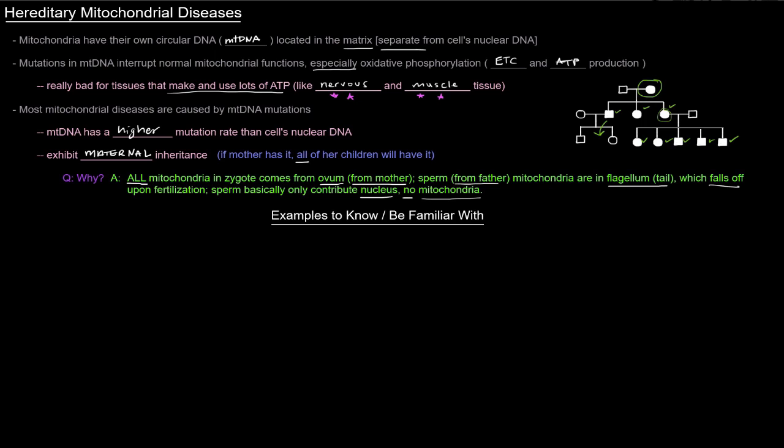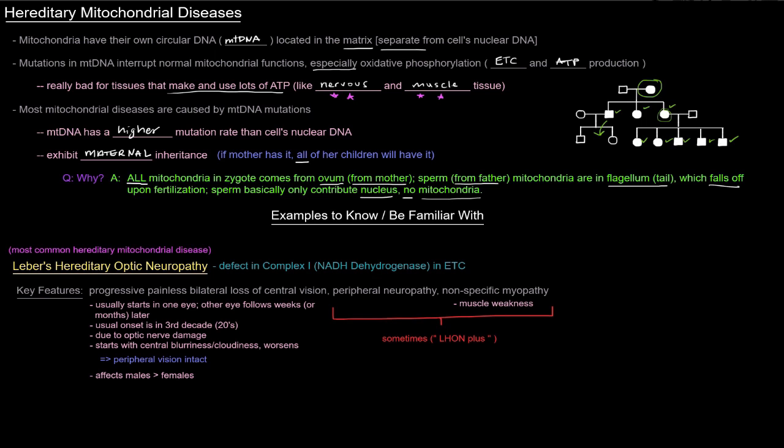Whereas the father, because the mitochondria don't actually end up in the zygote, fathers cannot pass on mitochondrial diseases. So examples to know or be familiar with: first one here is the most common hereditary mitochondrial disease, Leber's Hereditary Optic Neuropathy, or LHON.